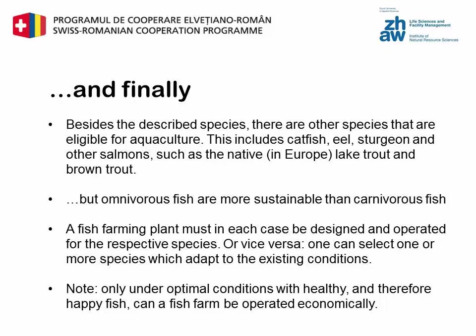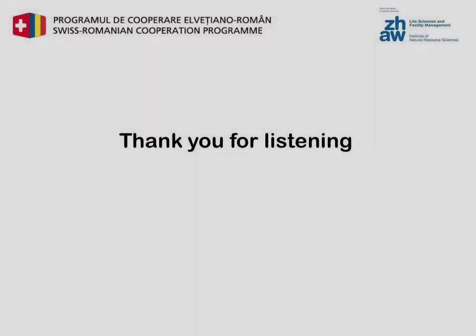In addition to the described species, there are other species that are also suitable for aquaculture. These include catfish, eel, sturgeon, and other salmons such as the European native lake trout and brown trout. But if you consider the sustainability of your aquaculture production system, omnivorous fish like tilapia or carp, which can obtain all the nutrients they need from small plants, bacteria, and algae, are a better choice than carnivorous fish that eat smaller fish. A fish farming plant must in each case be designed and operated for specific species, or alternatively you can select one or more species which will adapt to the existing conditions. Note that a fish farm can only be operated economically under optimal conditions with healthy and therefore happy fish. Thank you for listening.